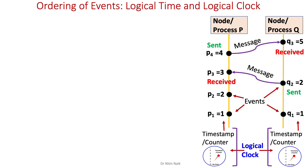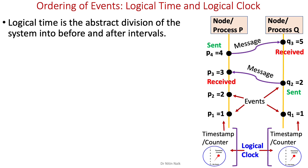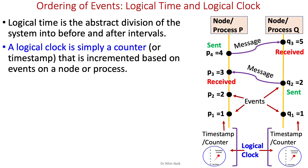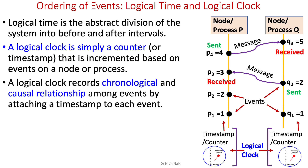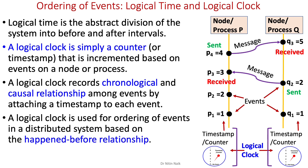Let's summarize logical time and logical clock. Logical time is the abstract division of the system into before and after intervals. A logical clock is simply a counter or timestamp that is incremented based on events on a node or process. The notion of logical clock was proposed by Leslie Lamport. A logical clock records chronological and causal relationships among events by attaching a timestamp to each event, and is used for ordering of events in a distributed system based on the happened-before relationship.